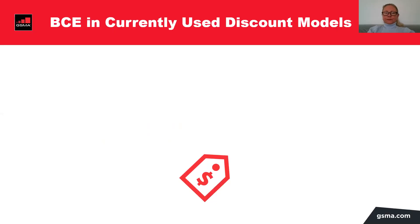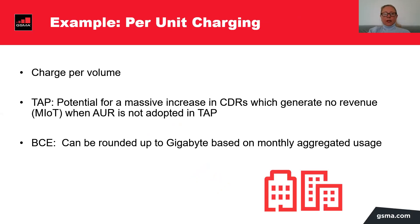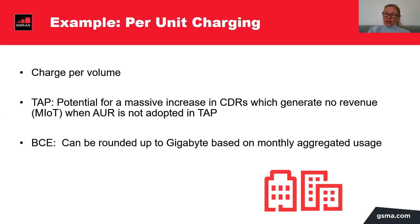When to use BCE? BCE can be used where TAP is not required to bill in subscribers. BCE is used for wholesale roaming discount models which TAP does not support — for example, tier charging or per-unit charging. You can charge per volume. In TAP there's a potential for massive increase in CDR numbers which will generate really no revenue, especially if aggregated usage record is not adopted in TAP. In BCE, it can be rounded to gigabyte based on monthly aggregated usage. So that would then be the solution.